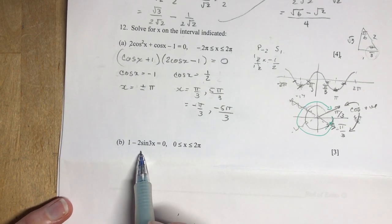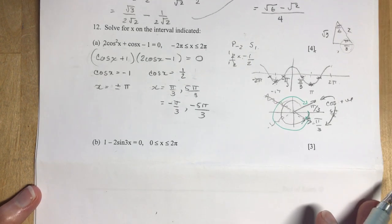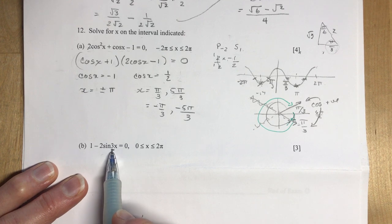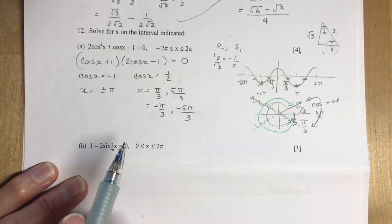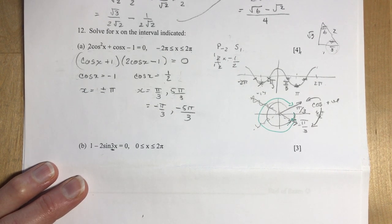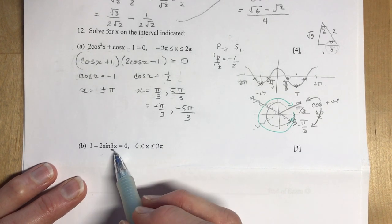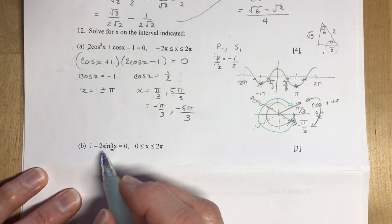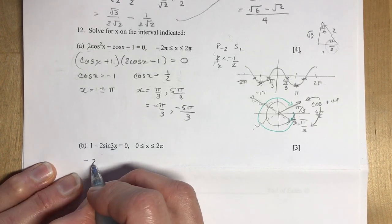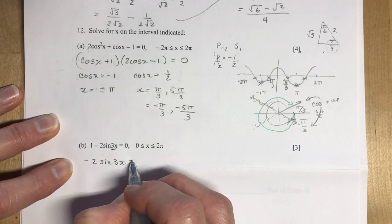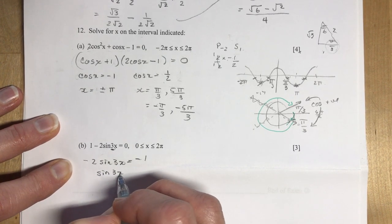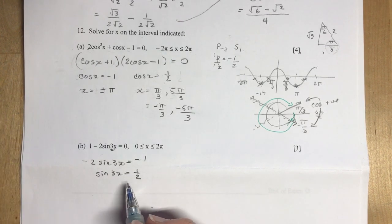Number 2, 1 minus 2 sine 3x equals 0 between 0 and 2π. So big warning here, the 3x, right? That's changing the period of the function. So we have to be careful to make sure that we're covering all of the, we adjust for the 3x. So if I solve this little equation, I would say, well, minus 2 sine 3x is equal to negative 1. So sine 3x is equal to a half. So where is sine 3x equal to a half?